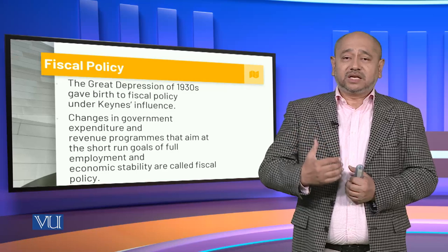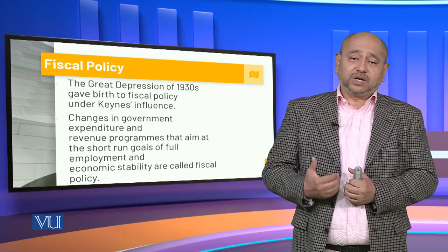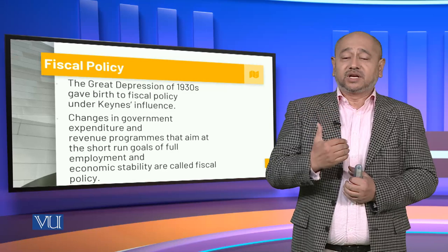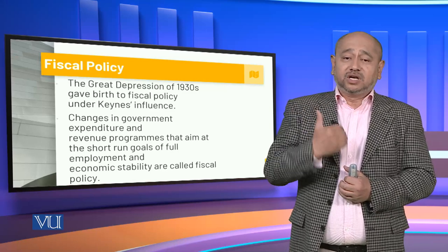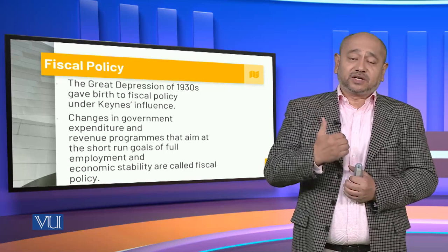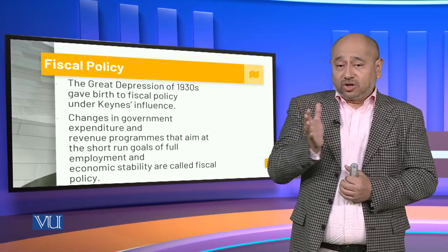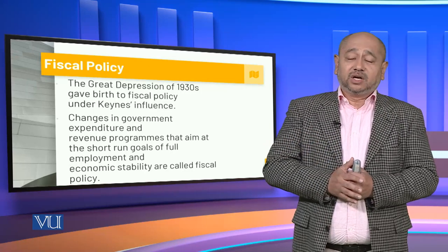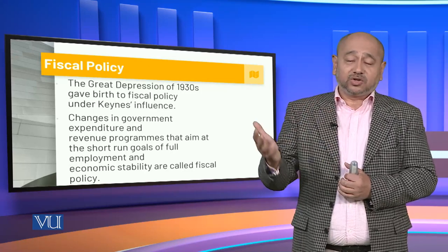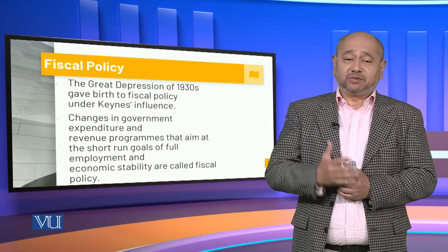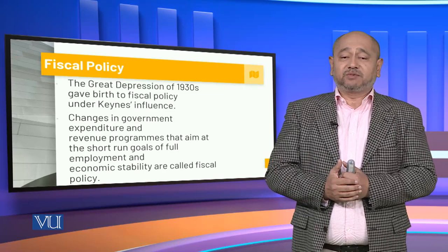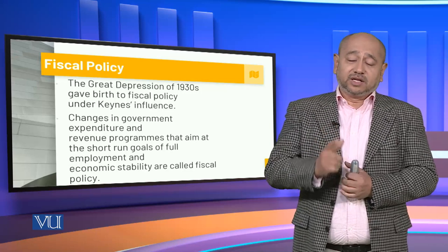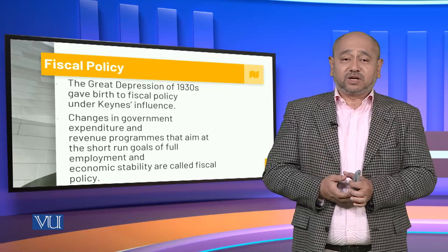The government has many heads of expenditure. The major ones are its own expenses, admin expenses, pay structures, balance of payments, return of loans, interest payments — all of which are called non-development expenses. Then we have development expenses, which include different development programs such as construction of roads, dams, facilities provided to the common man, and institutions being developed. All of that forms the development program, alongside the non-development budget, and together they mesh into fiscal policy.